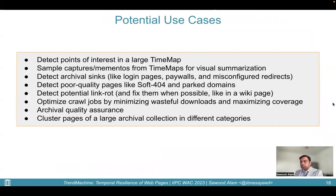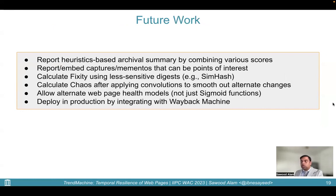The Trend Machine system has many potential use cases, such as detecting points of interest in a large time map, sampling mementos from time maps for visual summarization, detecting archival artifacts like loading pages and paywalls, detecting poor quality pages like soft 404s in parked domains, detecting potential link rot, optimizing crawl jobs by minimizing wasteful downloads and maximizing coverage, archival quality assurance, and clustering pages of a large archival collection into different categories. In the future, we would like to report heuristics-based archival summaries by combining various scores, embed captures that can be points of interest, calculate fixity using less sensitive digests such as SimHash, calculate chaos after applying convolutions to smooth out alternating changes, allow alternate web page health models beyond sigmoid functions, and deploy to production by integrating with the Wayback Machine.